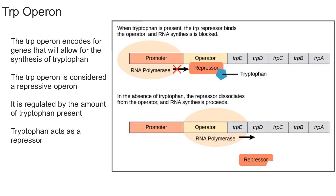That pretty much sums it up. As you can see if you watched the lac operon video, the trp operon is a lot more simple. To briefly summarize the key takeaways: the trp operon encodes for the genes that allow for the synthesis of tryptophan; the trp operon is considered a repressible operon; and tryptophan acts as the co-repressor, meaning you need tryptophan to repress the transcription. Thank you for watching — if you have any comments or questions please type them below, and if you found the video useful please give it a like and subscribe.